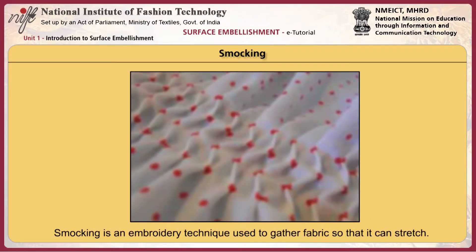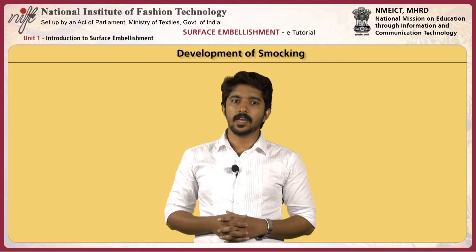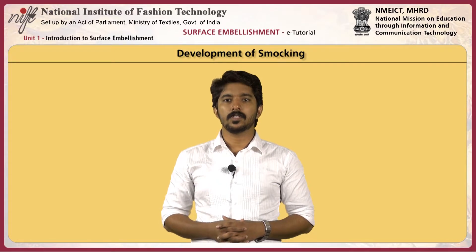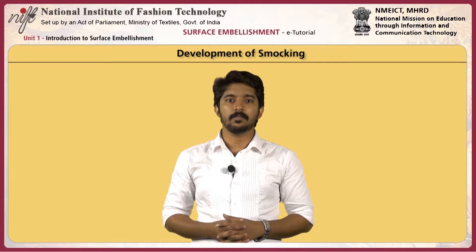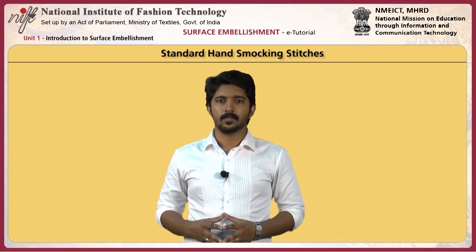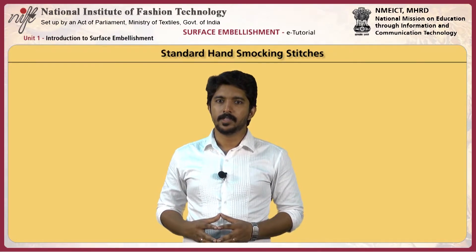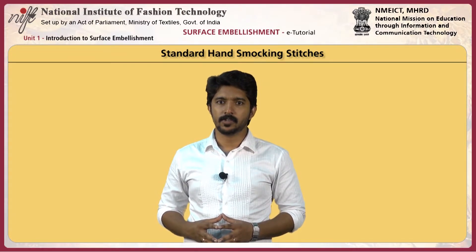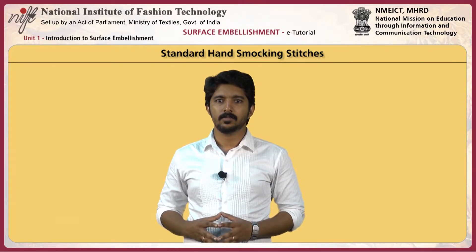Smocking is an embroidery technique used to gather fabric so that it can stretch. Before elastic, smocking was commonly used in cuffs, bodices, and necklines in garments where buttons were undesirable. Smocking developed in England and has been practiced since the Middle Ages. It is unusual among embroidery methods in that it was often worn by laborers, whereas other major embroidery styles are purely decorative and represent status symbols. Smocking was practical for garments requiring flexibility; hence its name derives from 'smock,' a farmer's work shirt. Standard hand smocking stitches include: cable stitch, stem stitch, outline stitch, cable florette, wave stitch, honeycomb stitch, surface honeycomb stitch, trellis stitch, Van Dyke stitch, bullion stitch, and smocker's knot.